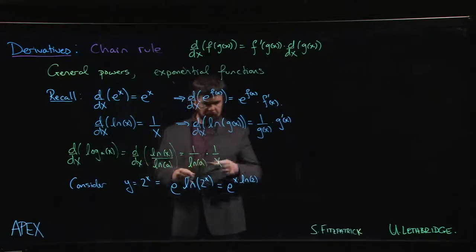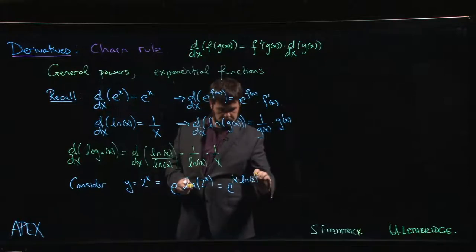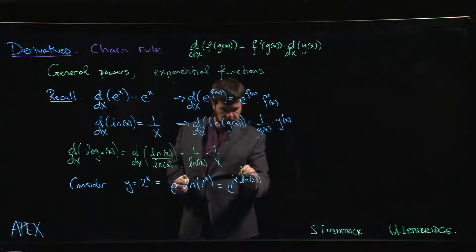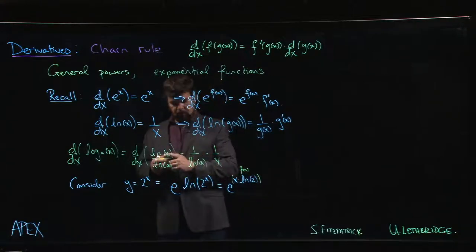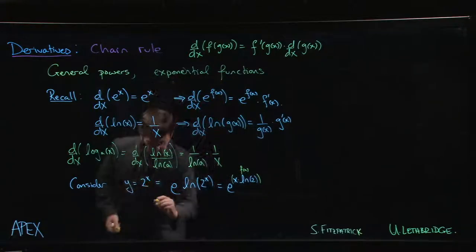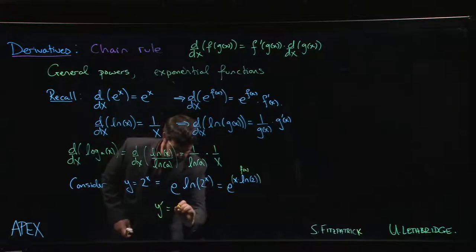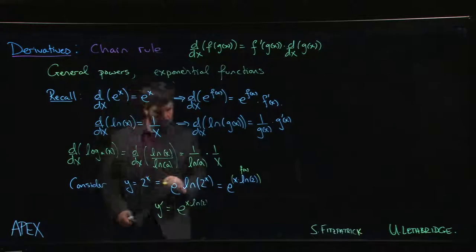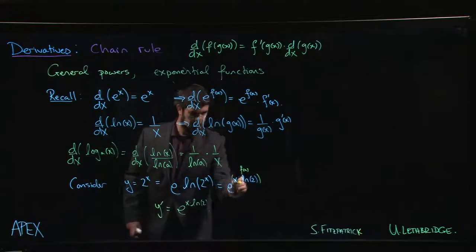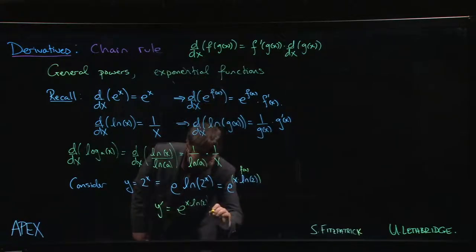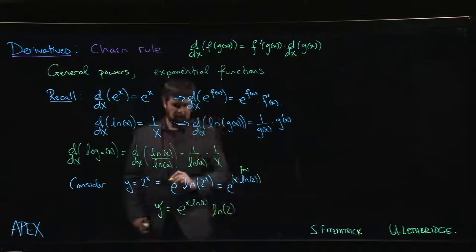Well, this is useful because here we have an exponent, which is not quite x. It's a multiple of x. But we can think of this as our f of x in the pattern above. So if I wanted to know what y prime is, y prime is simply going to be e to the x times the natural log of 2 multiplied by the derivative of this. But this is just a multiple of x. So we get the derivative of x, which is just 1 times the multiple. So we get the natural log of 2.